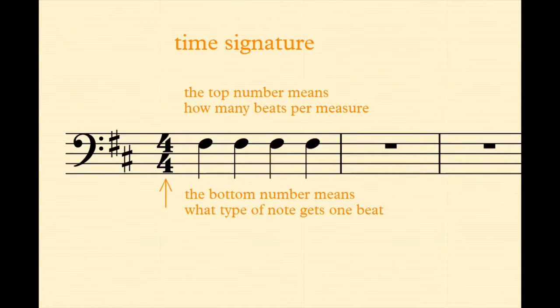The bottom number means what type of note gets one beat. The number four means a quarter note so we have four beats per measure and four quarter notes. Most beginning music is in four four time and you can also see three four time and two four time.